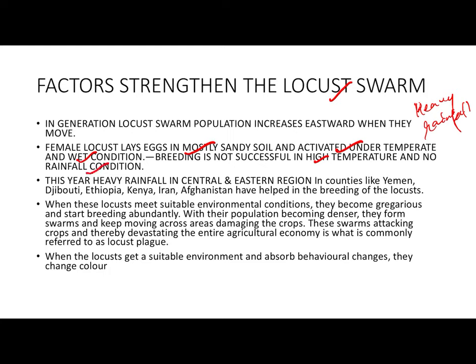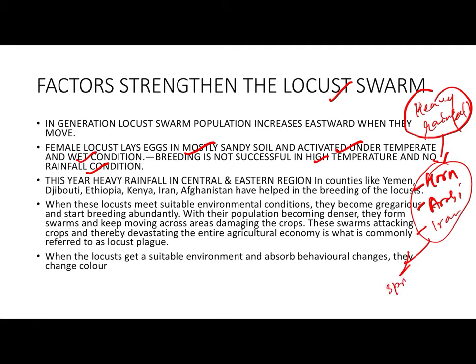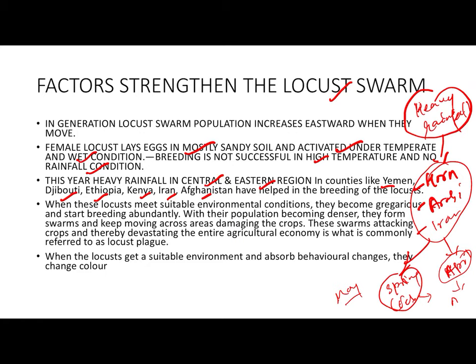In the Horn of Africa, the Arabian Peninsula, and the deserts of Iran, locusts lay eggs in the spring season from February, or in summer in April. In spring they are small; in April they are adult. The second factor is heavy rainfall this year in the central and eastern region — particularly in Yemen, Djibouti, Ethiopia, Kenya, Iran, and Afghanistan — which helped breeding. Their numbers increase greatly under suitable environmental conditions.